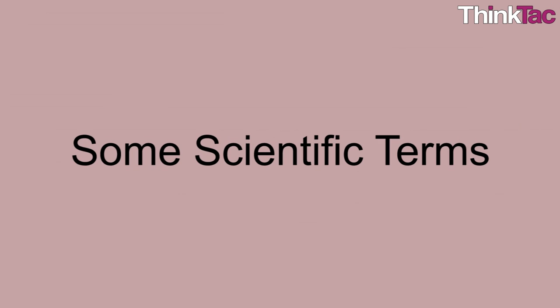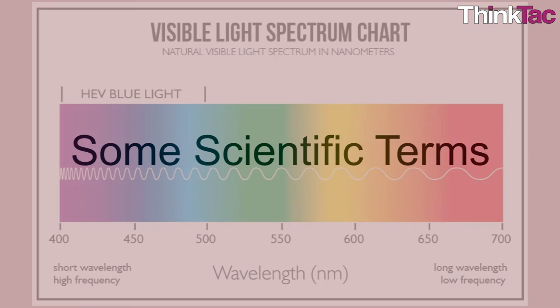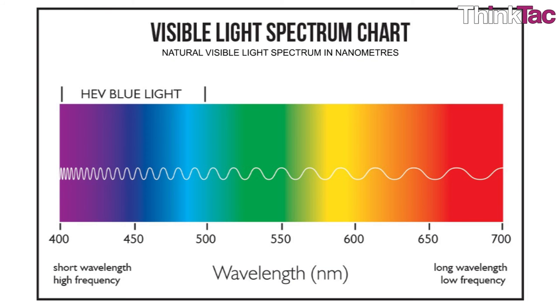Some scientific terms that you should be familiar with: A visible light spectrum is the portion of the electromagnetic spectrum that is visible to the human eye. A typical human eye will respond to wavelengths from about 390 to 700 nanometers, or in frequency space, from 770 terahertz to about 430 terahertz.